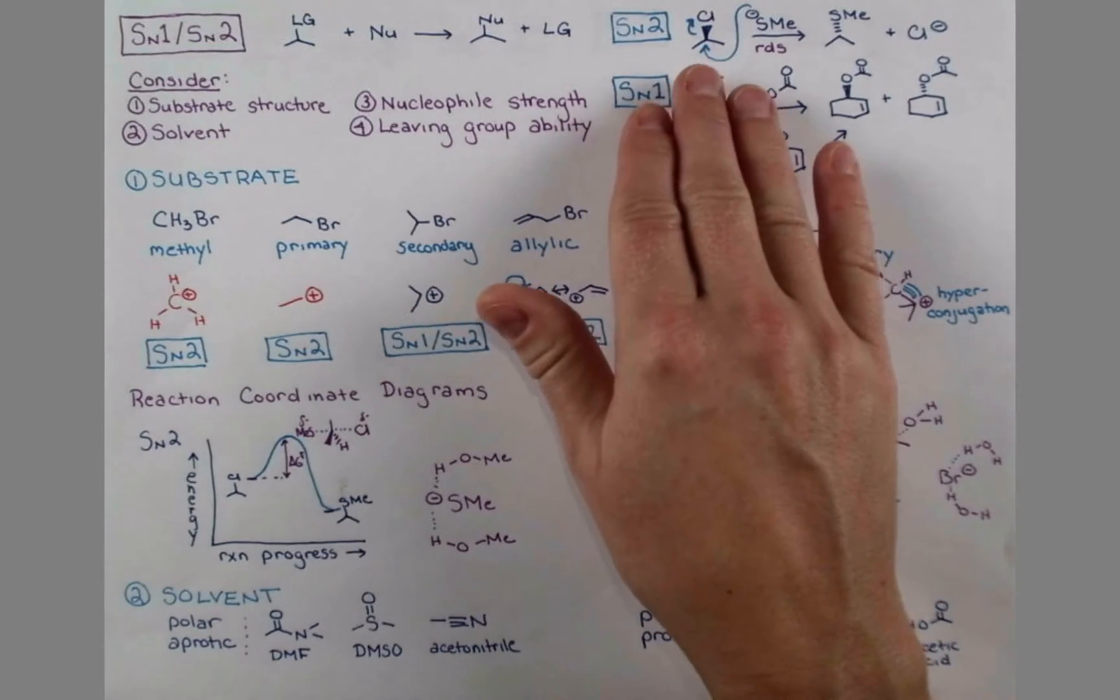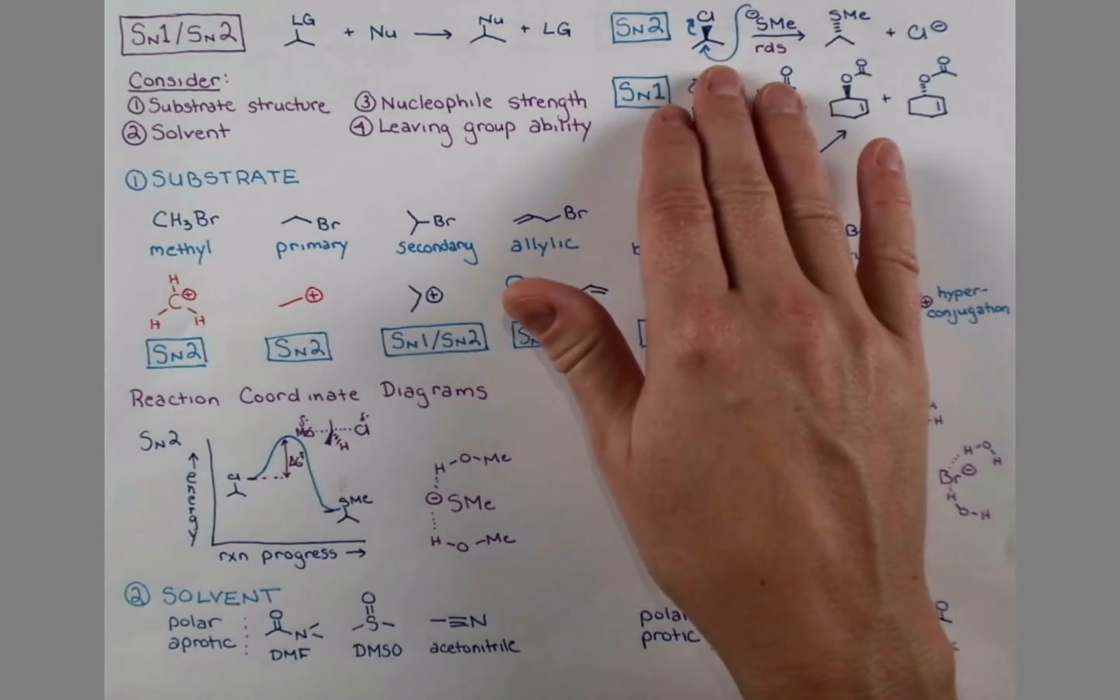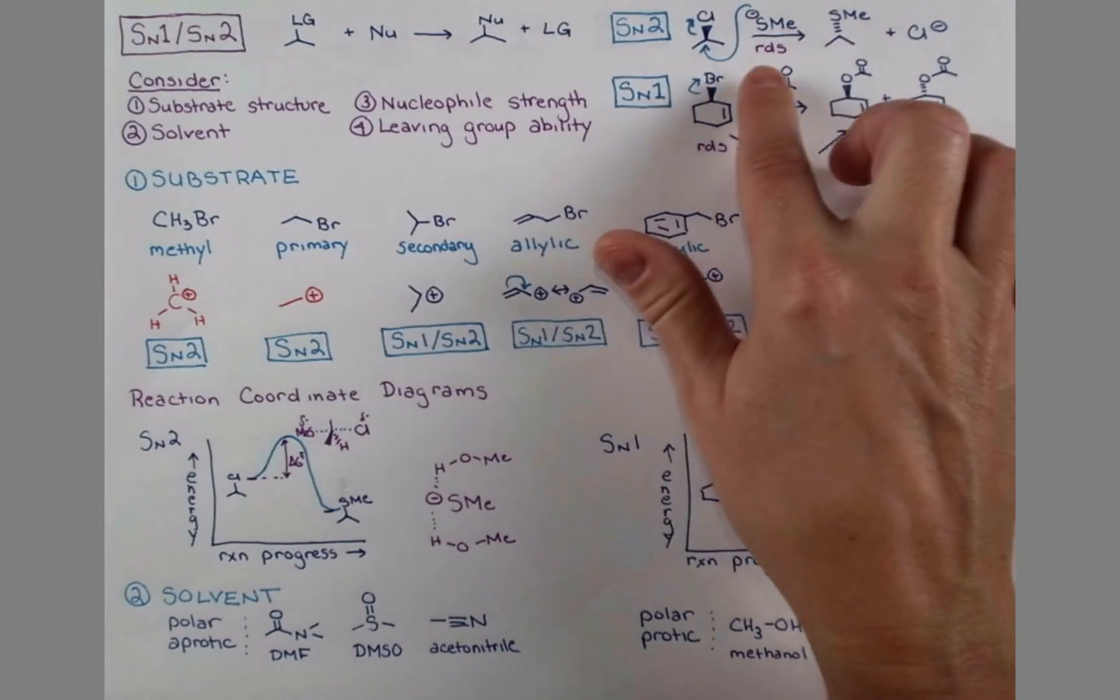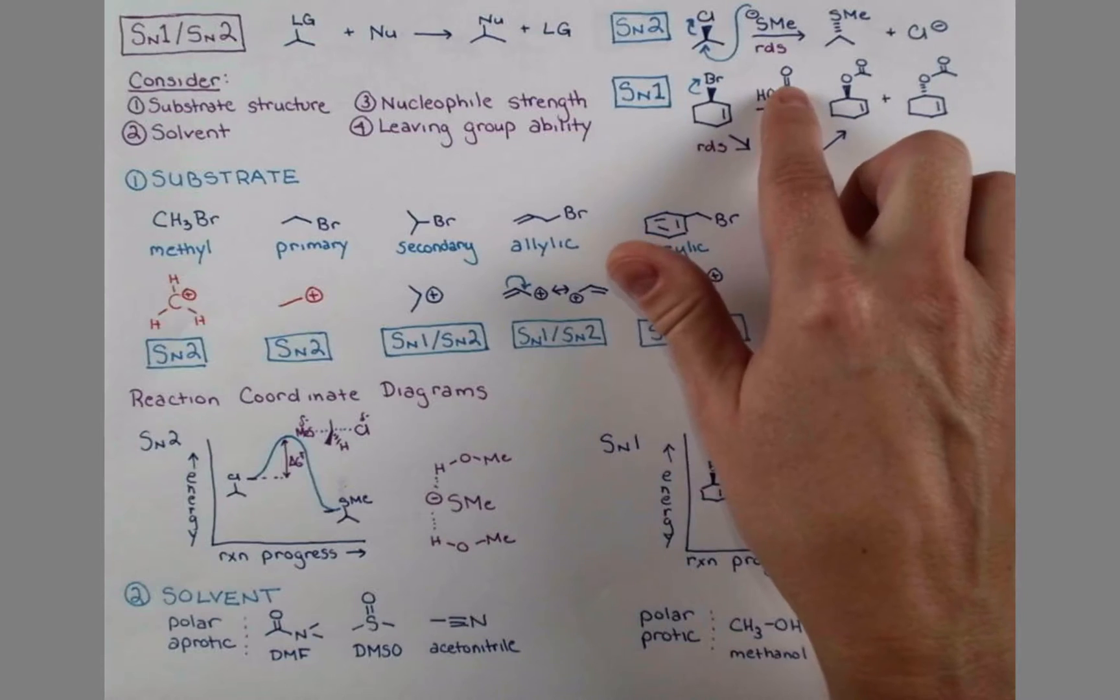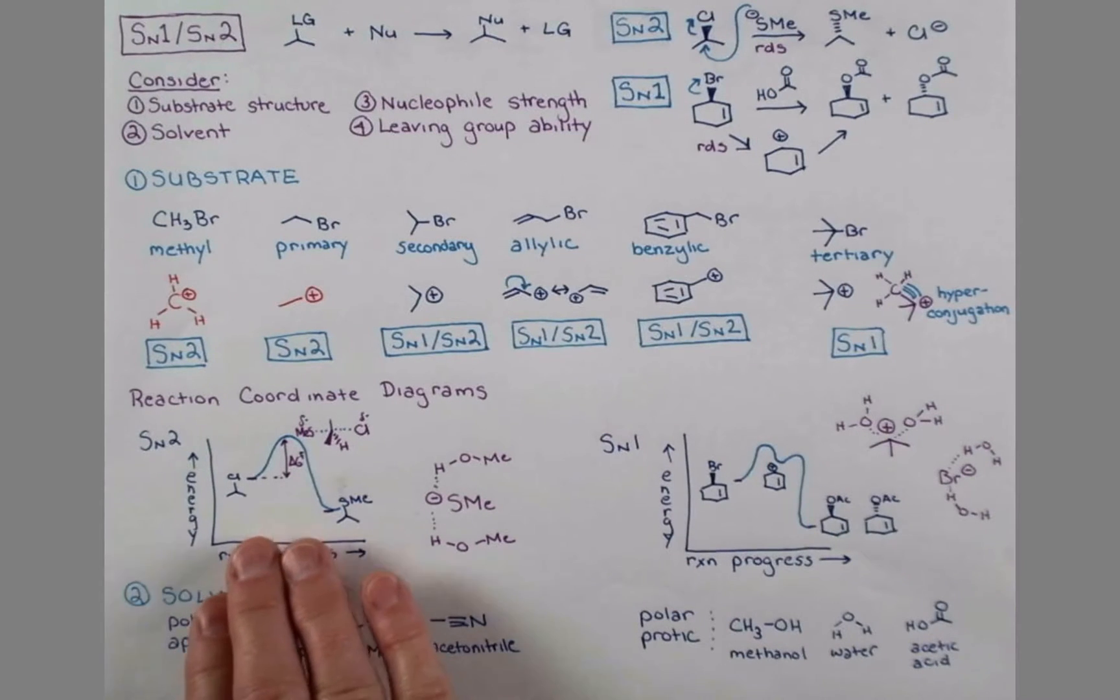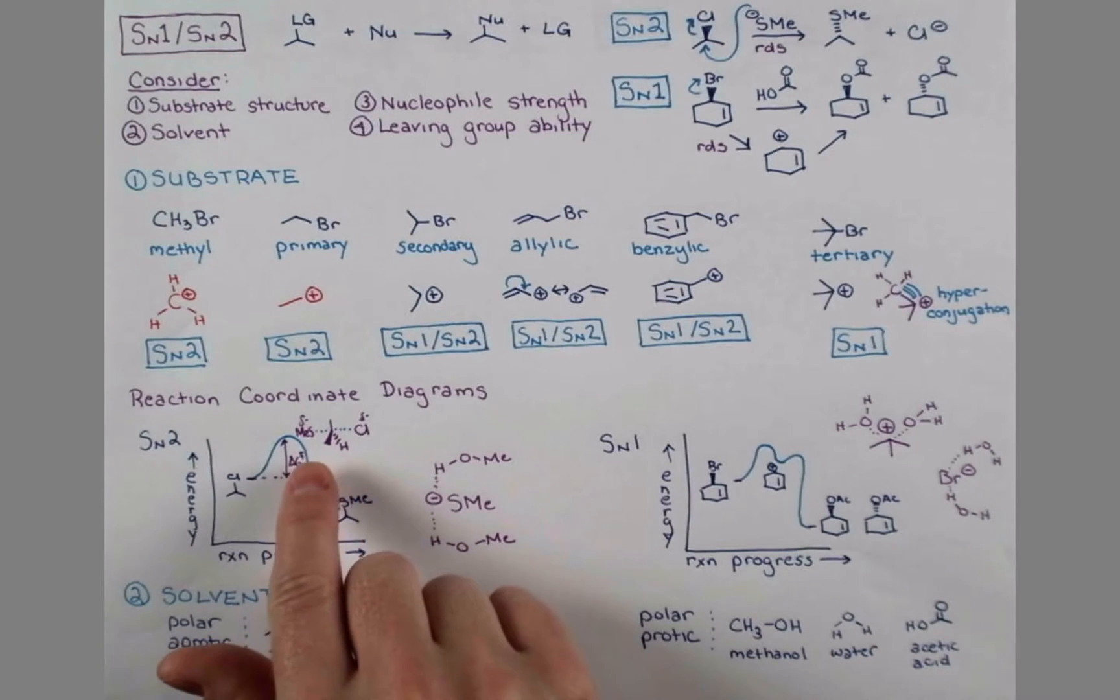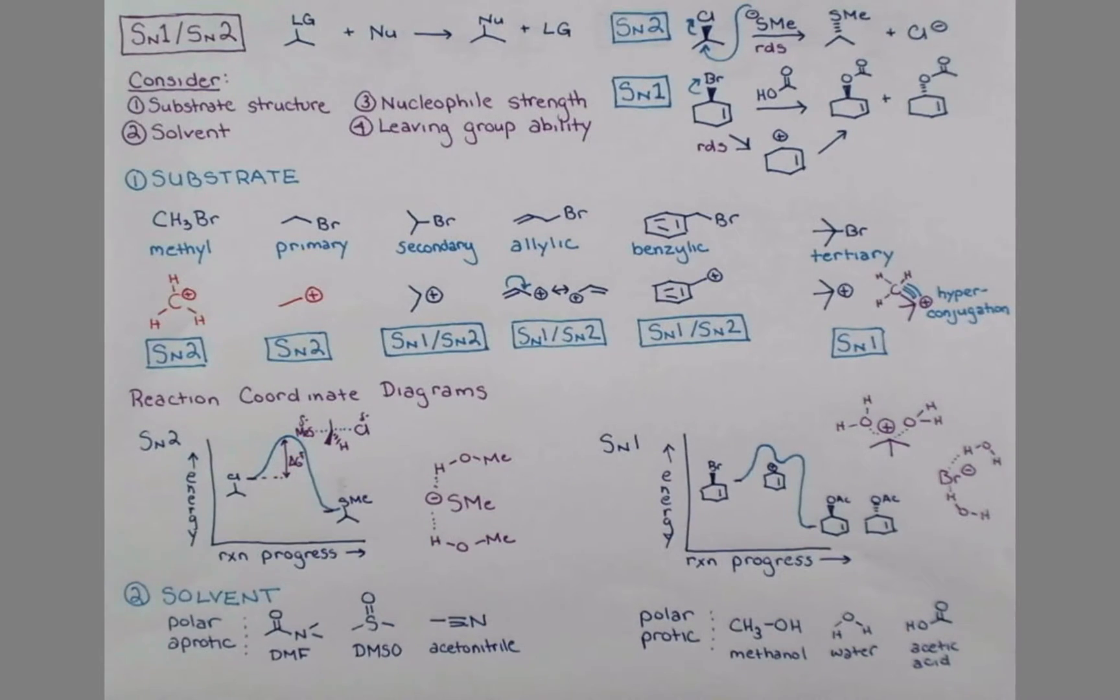In the SN2 mechanism, both of these compounds, this substrate with the leaving group and the nucleophile, are involved in the rate determining step. The reaction coordinate diagram looks something like this, with this high energy point representing a transition state where we have partial bonds formed and broken with the nucleophile and leaving group.